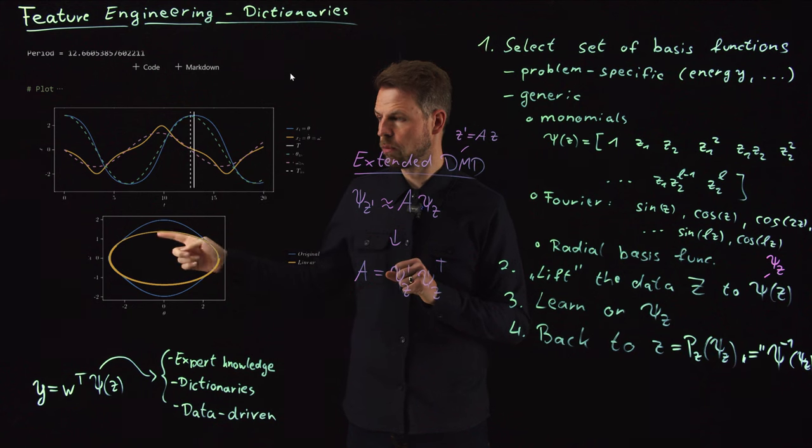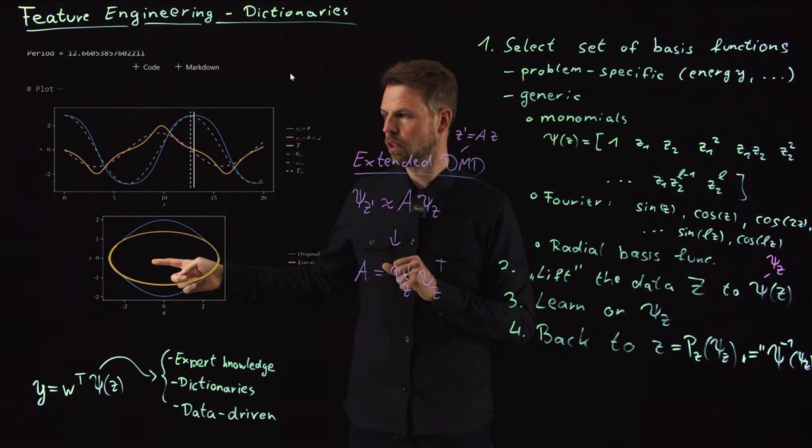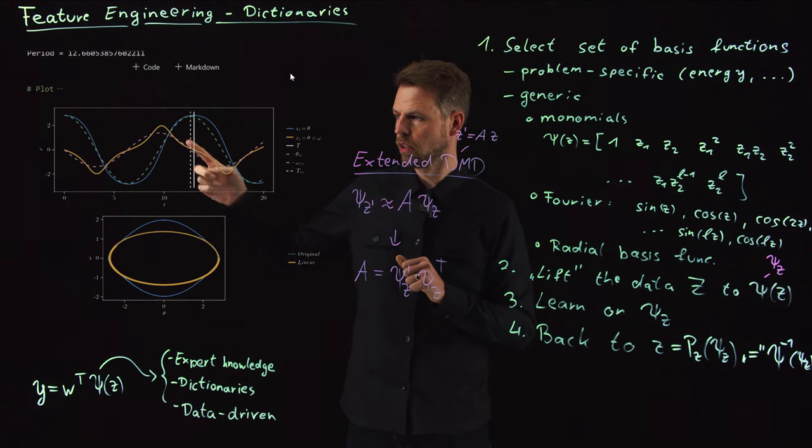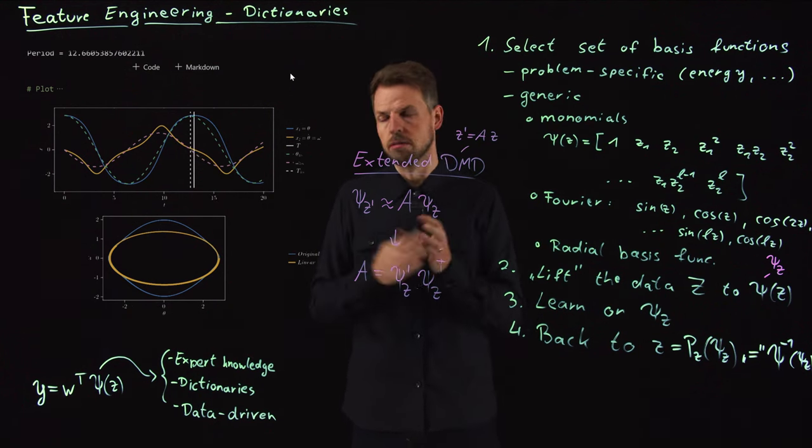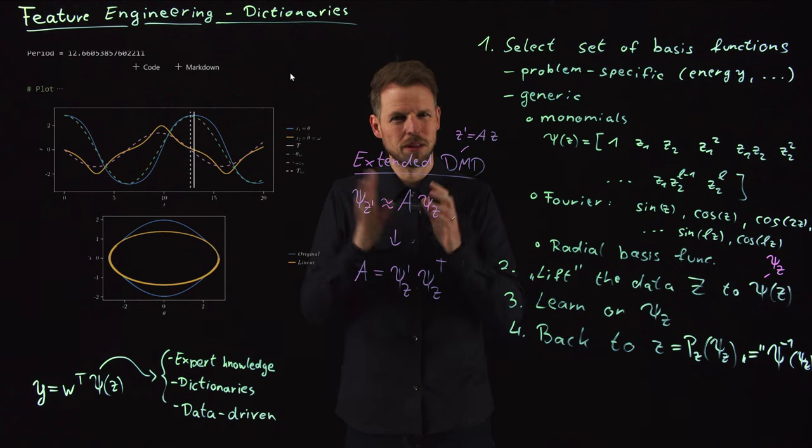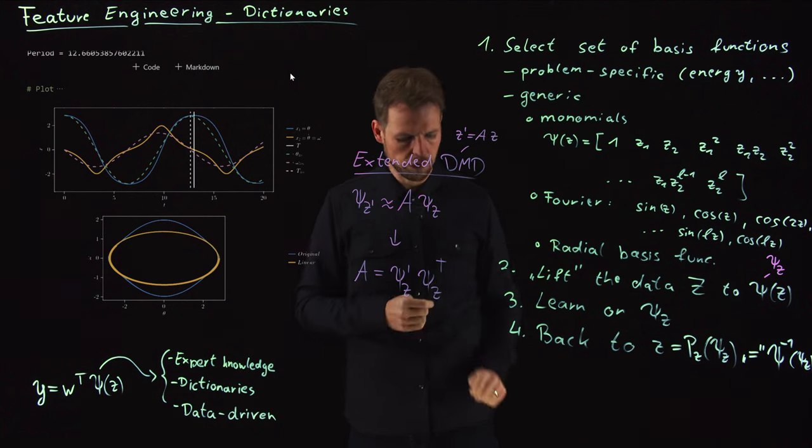And these are the dynamics that we get now on our DMD model. As you see, a linear model has to form an ellipse in this phase diagram, and here we have this clearly periodic oscillating behavior. And so, well, it's acceptable, but clearly not sufficient for an accurate model.